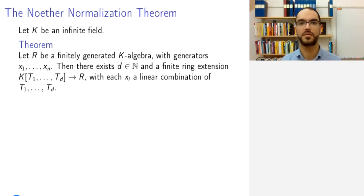What does the Noether normalization theorem say? We will be working over an infinite field, not necessarily algebraically closed. And the theorem says that if R is a finitely generated K-algebra, commutative and unital as usual, with generators x1 to xn, then there is a number d that intuitively we think of as the dimension somehow.